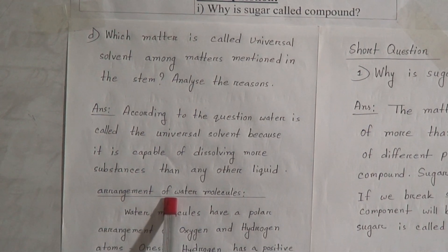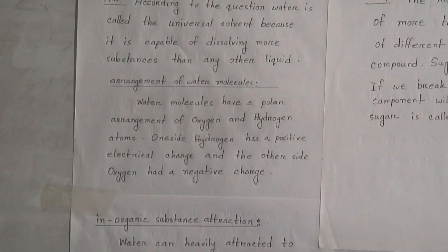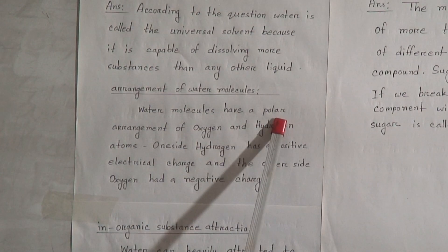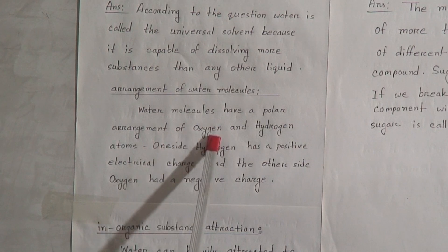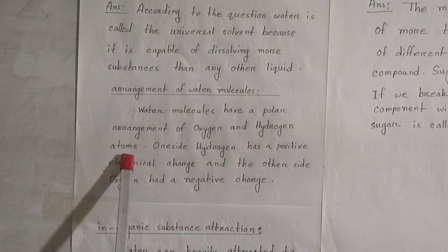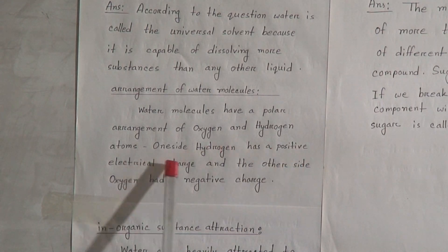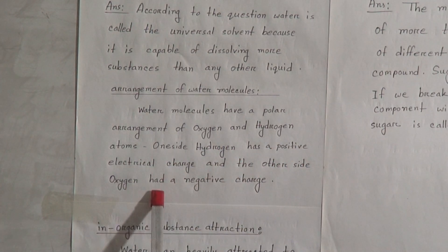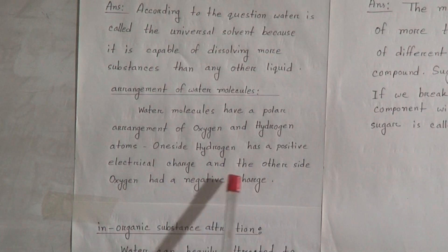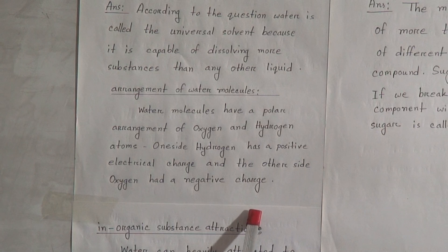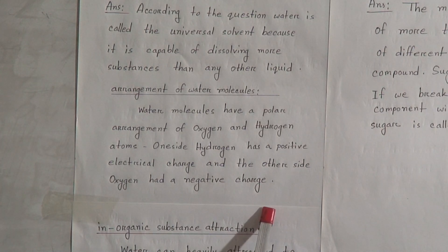Here is the arrangement of water molecules. Water molecules have a polar arrangement of oxygen and hydrogen atoms. One side hydrogen has a positive electrical charge and the other side oxygen has a negative charge. This allows the water molecules to become attracted to many other different types of molecules.